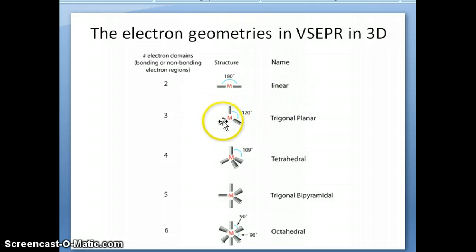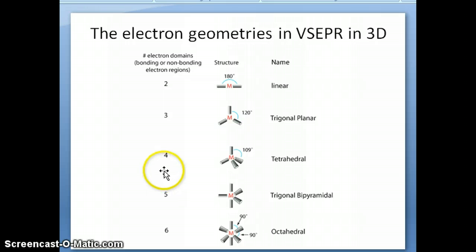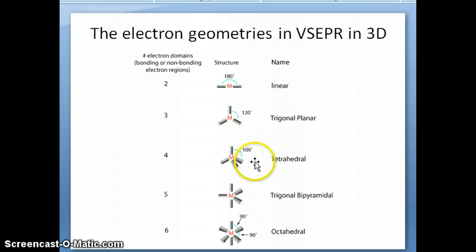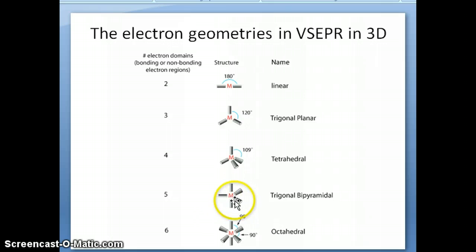If there are three electron pairs around the central atom, the furthest they can get away from each other is 120 degrees — that's called trigonal planar. Four electron pairs, as in the CH4 example from the previous video, gives the tetrahedral structure with an angle of 109.5 degrees. If you have five electron pairs around the central atom, you get something called a trigonal bipyramidal structure.